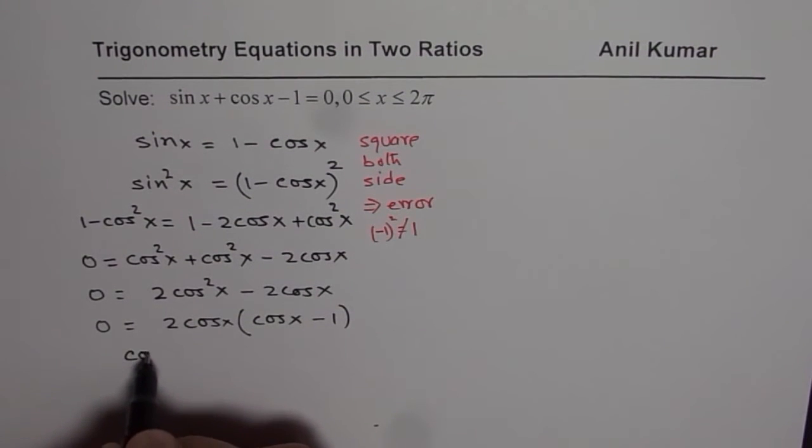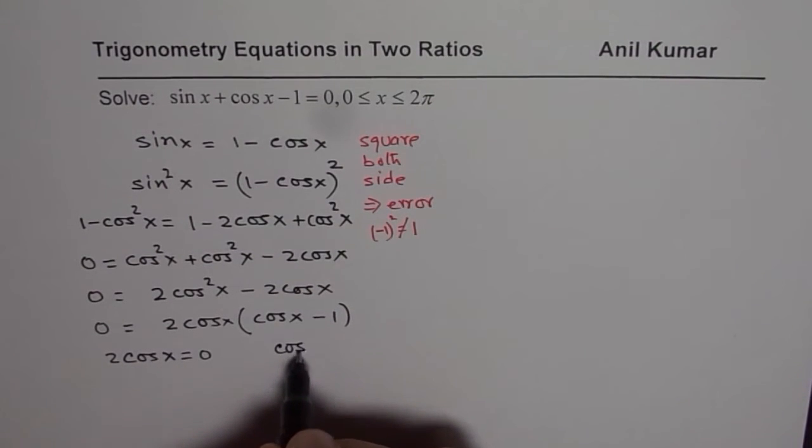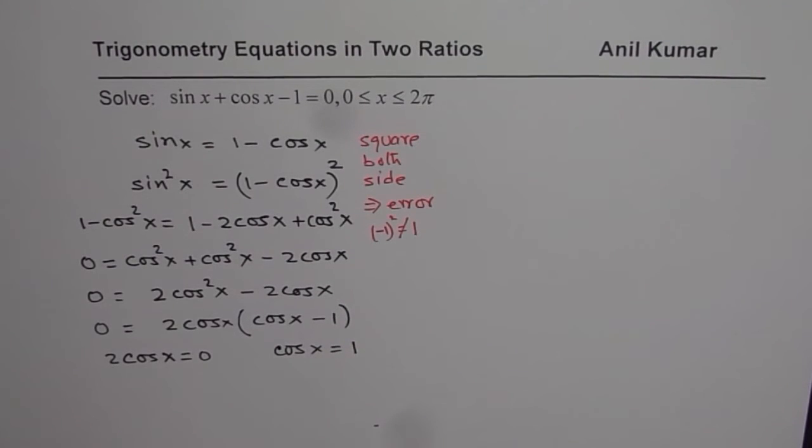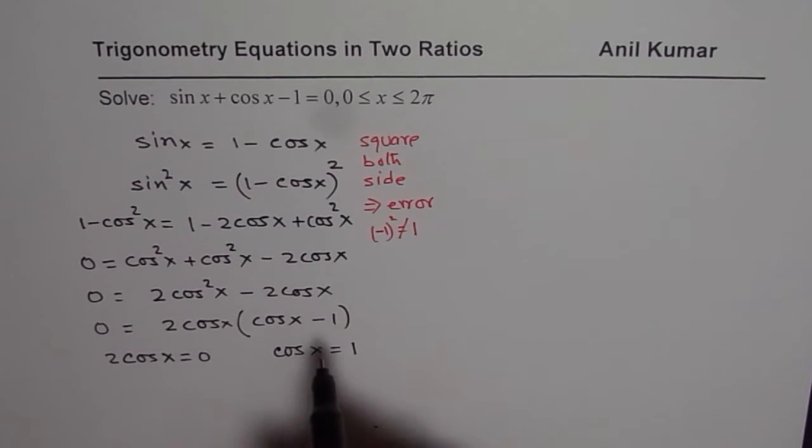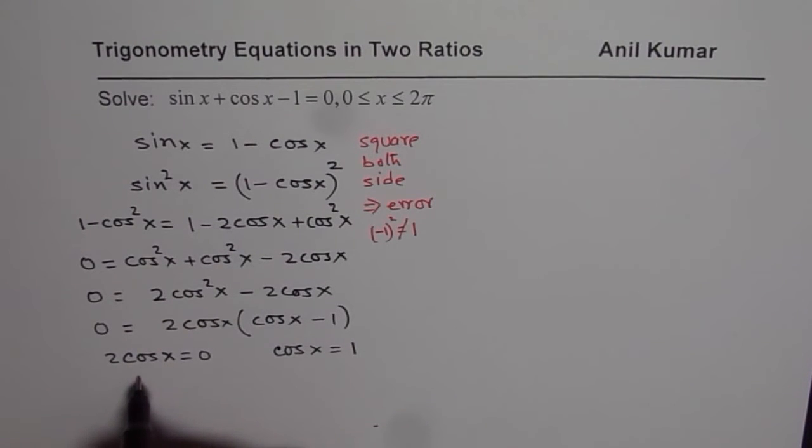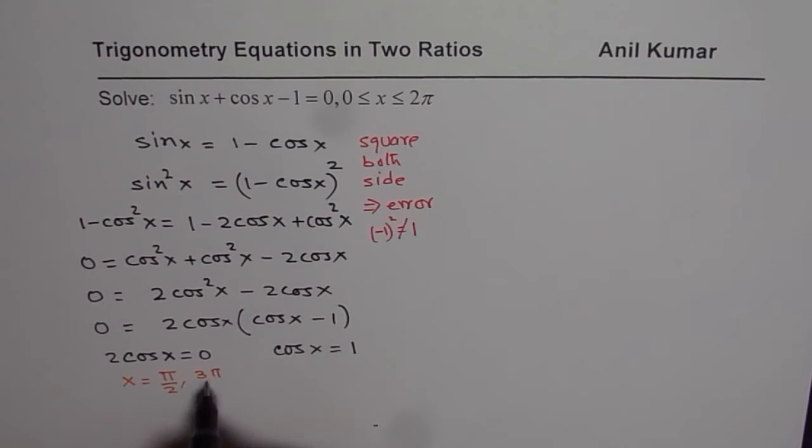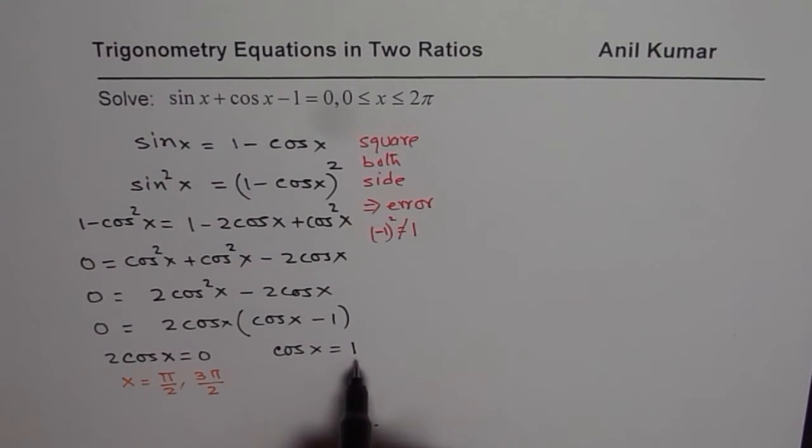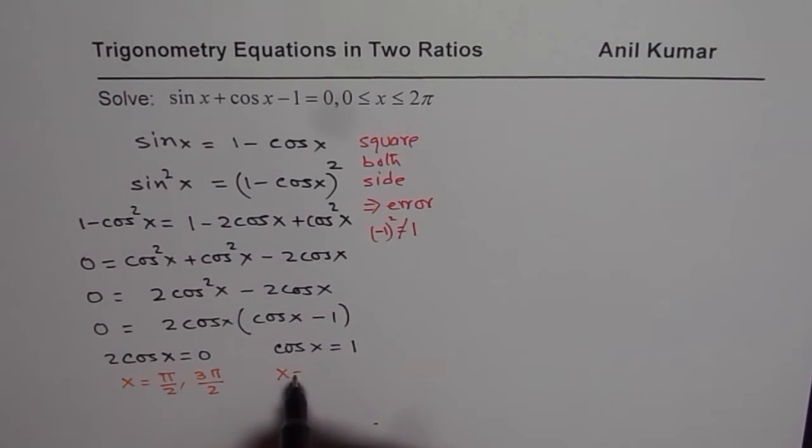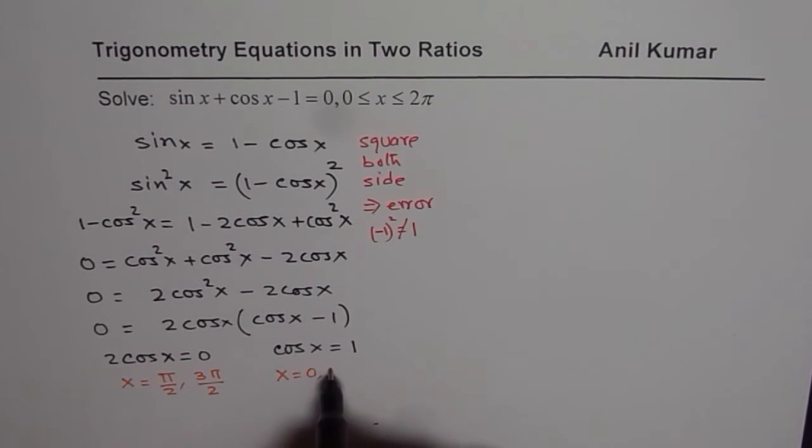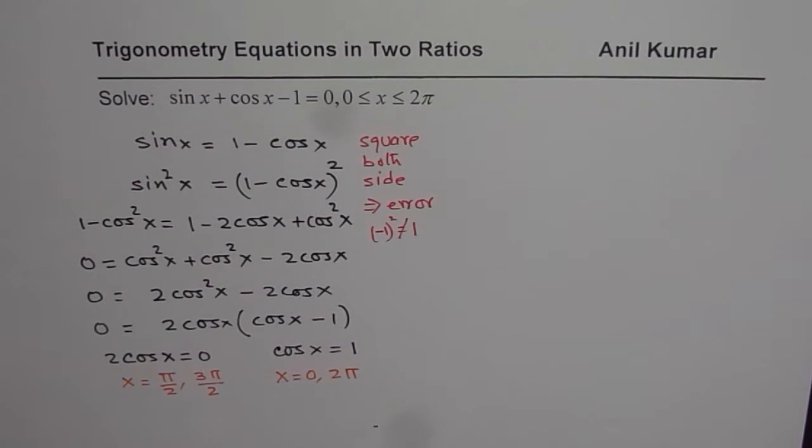So one of the solutions could be when 2 cos x equals to 0 and the other one is when cos x equals to 1. In the domain 0 to 2 pi, we know possible solutions for cos x equals to 0 is when x equals to pi by 2 or 3 pi by 2. As far as cos x equals to 1 is concerned, the solutions could be 0 and 2 pi. These are possible solutions.